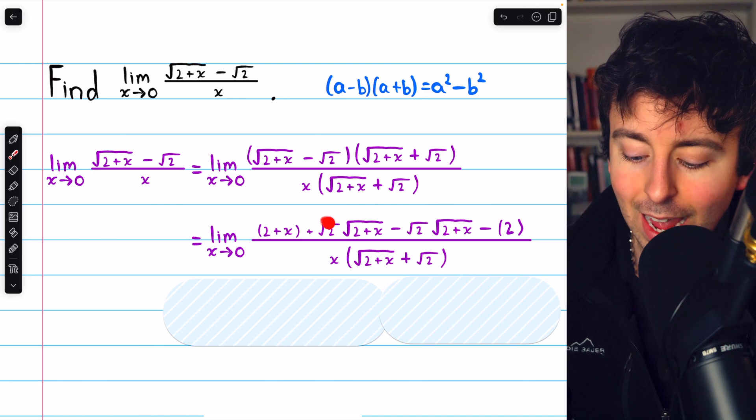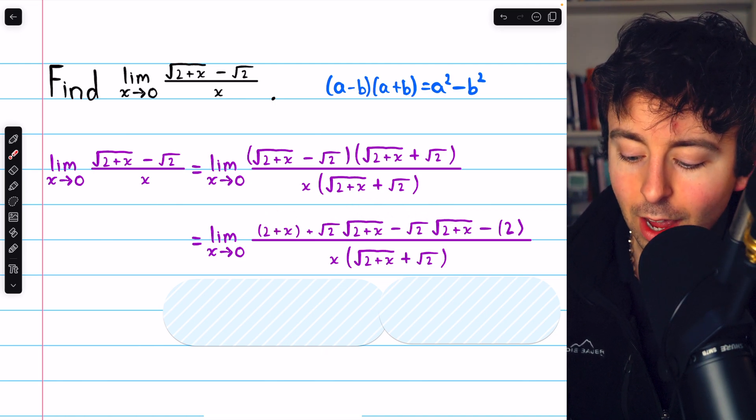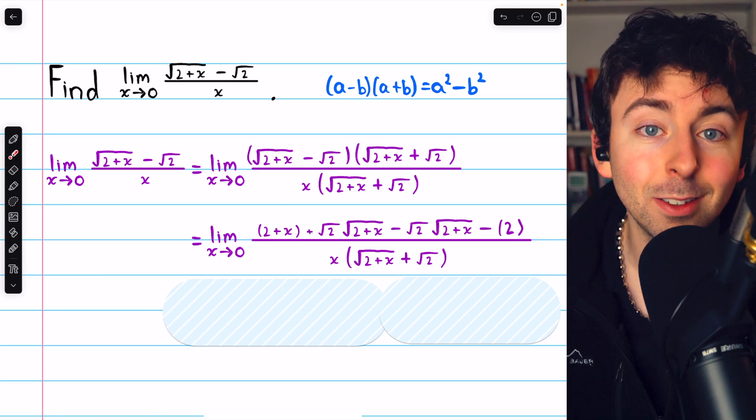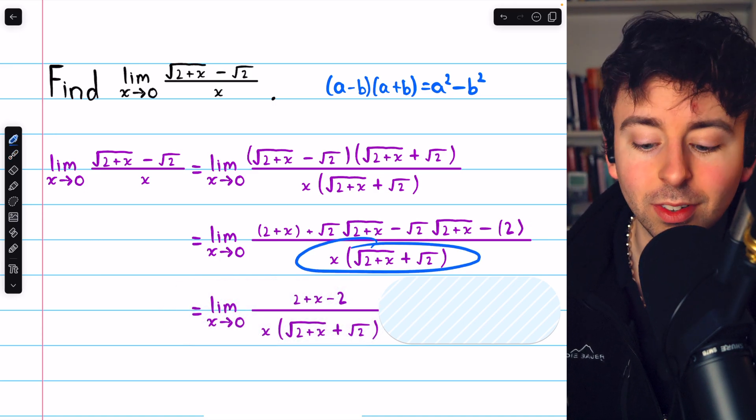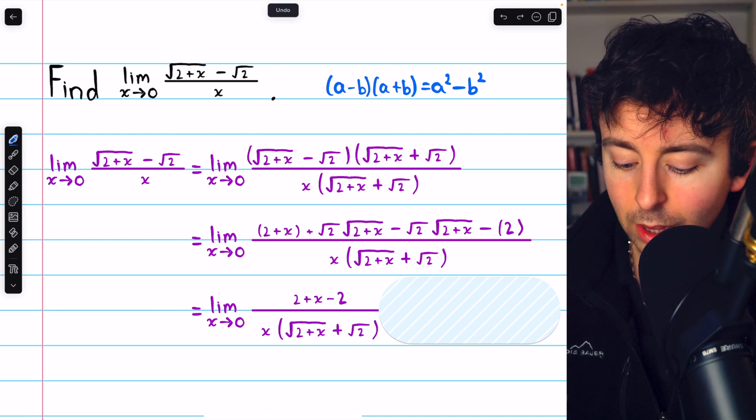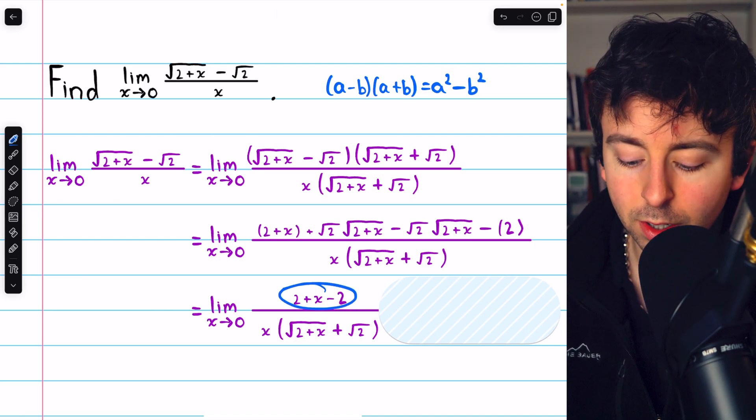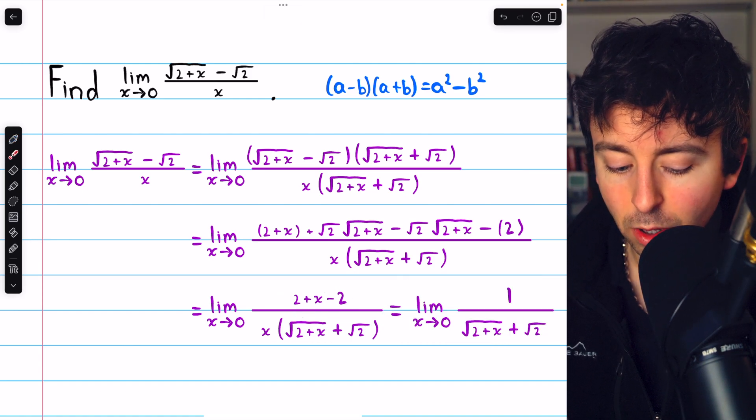You can see that the middle terms are going to cancel out, which is why we're going to end up just having the difference of 2+x and 2. There's no need to distribute in the denominator, we'll just leave that how it is. Canceling out those middle terms, we're left with 2+x-2 in the numerator, the denominator's unchanged, and now we can cancel out those twos.